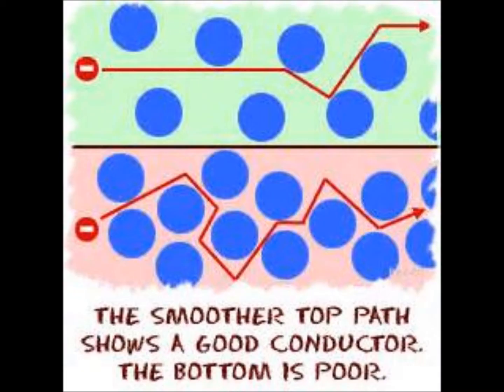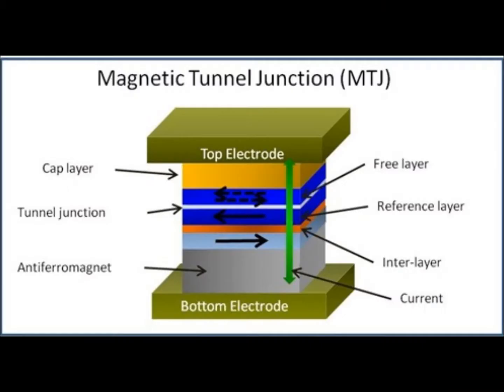Tunneling can be used to make extremely conductive devices, like magnetic tunnel junctions — two ferromagnets separated by a thin insulator only a few nanometers thick — through which electrons tunnel from one ferromagnet to the other at very high rates.